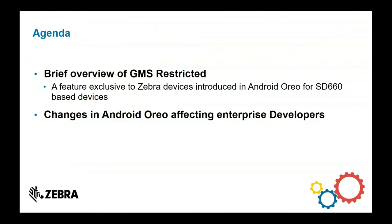The agenda: I will very briefly go over our GMS Restricted feature. This is something introduced in our new devices — the TC52, TC57, TC72, TC77, and PS20 — which have been announced very recently. These are shipping with Oreo out of the box, hence the timing of this DevTalk. It is a soft launch, a feature we will be adding to over the coming releases, and we'll probably do a DevTalk in the new year about it. I just wanted to introduce the concept here because it is new and specific to Oreo.